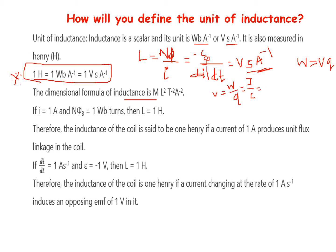Joule is Newton meter, and coulomb is current multiplied by time — that is ampere multiplied by second. So we have Newton meter divided by ampere second. Newton meter is kilogram meter squared per second squared, so we get kilogram meter squared divided by ampere second.